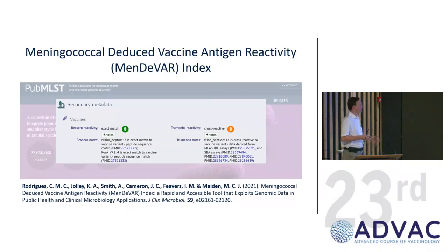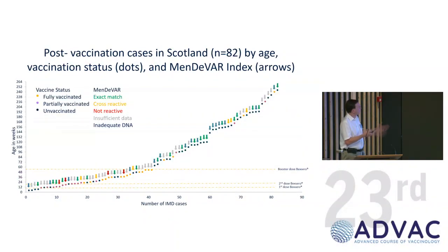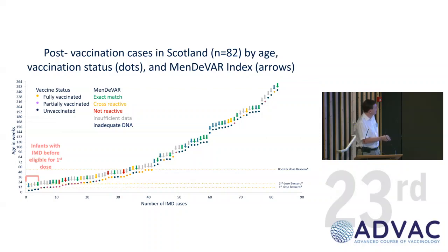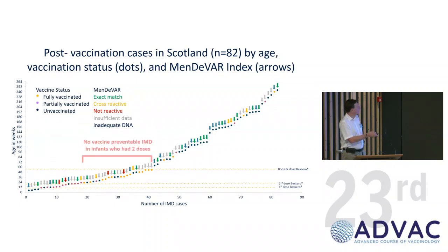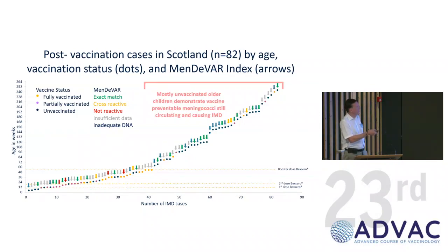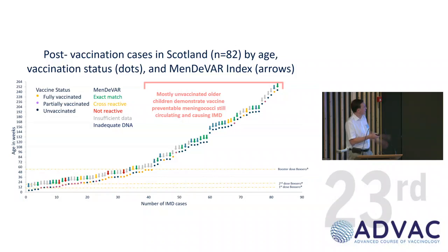What we can do is see what the variants are. A colleague of mine, Charlene Rodrigues, was able to collate within our PubMLST database the extracted sequence information from sequenced isolates combined with lab assay data to predict whether a given strain is likely to be protected by the vaccine. This enables some prediction of whether a particular strain will be covered, because you cannot possibly test every single strain.